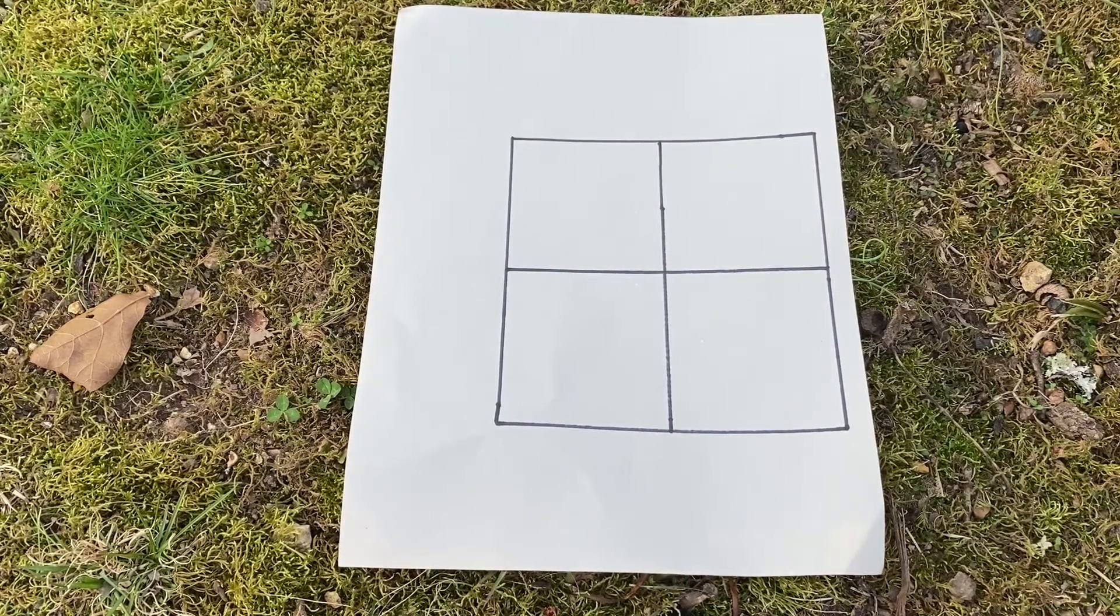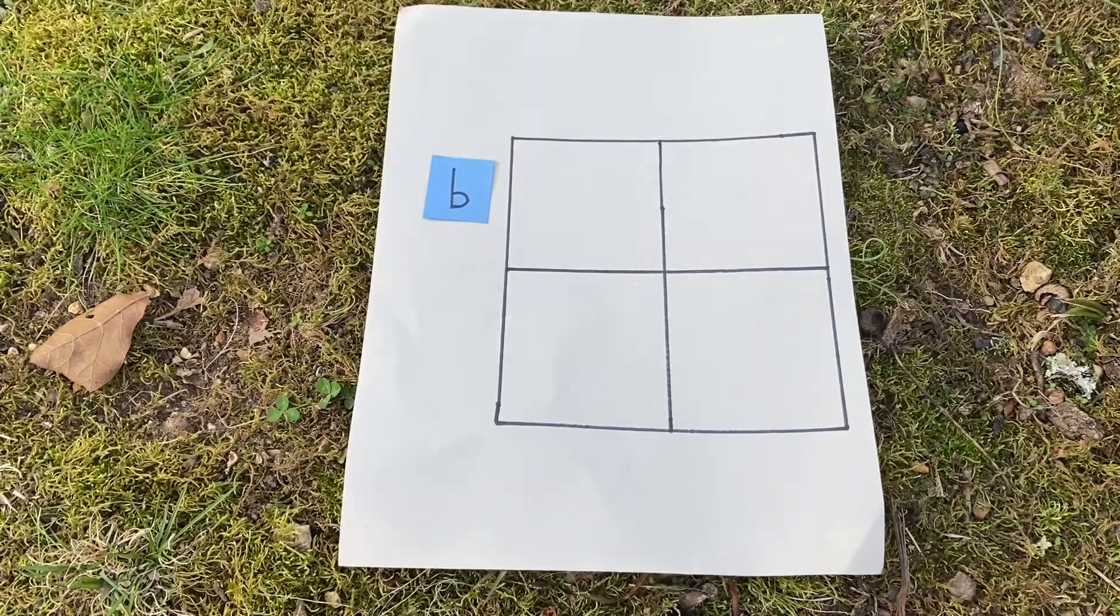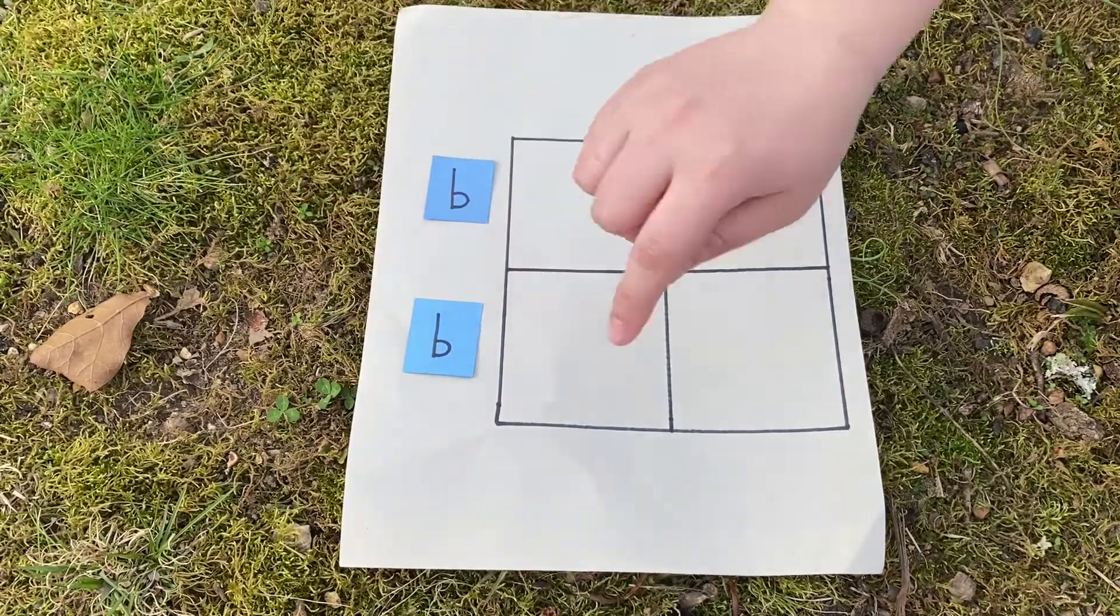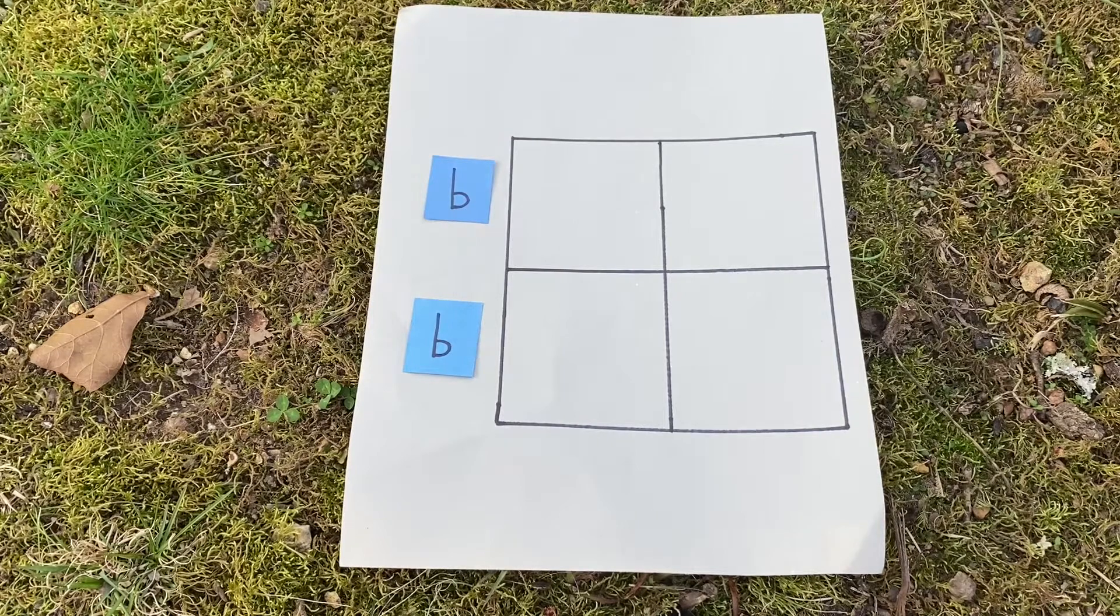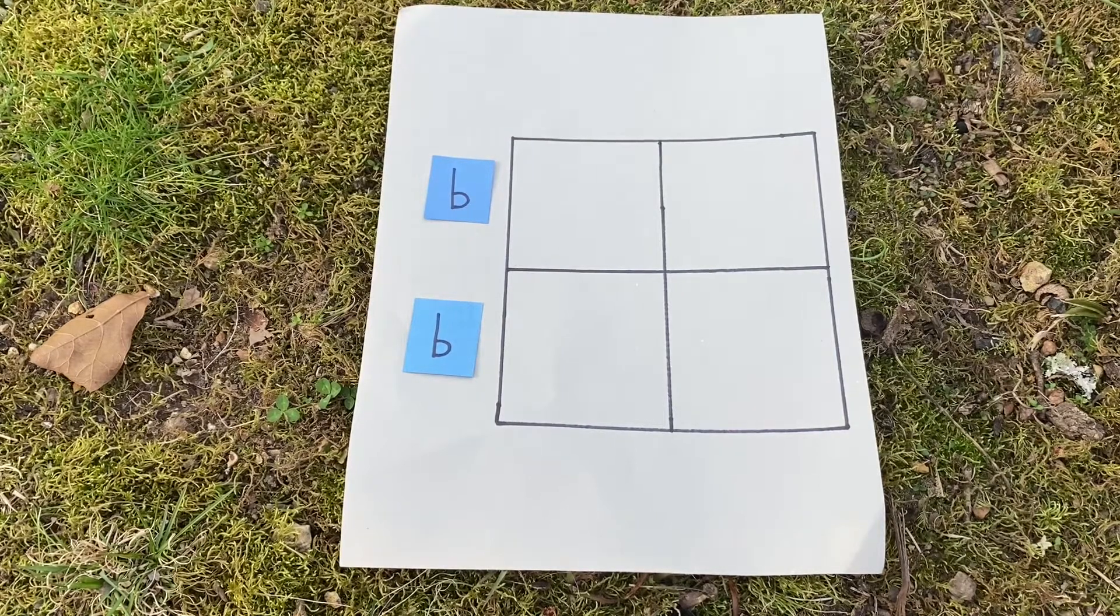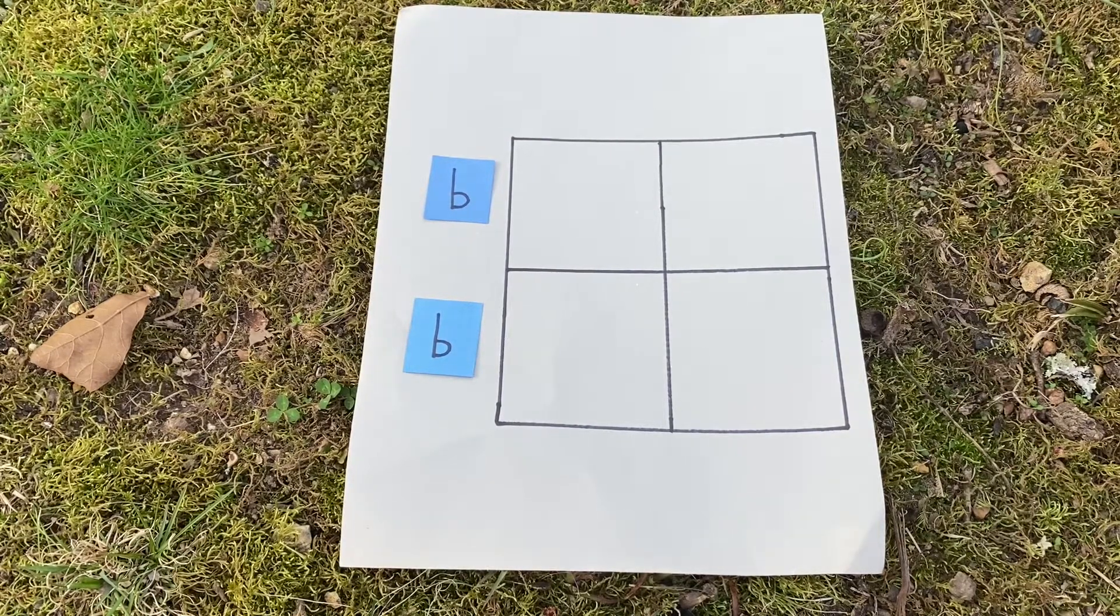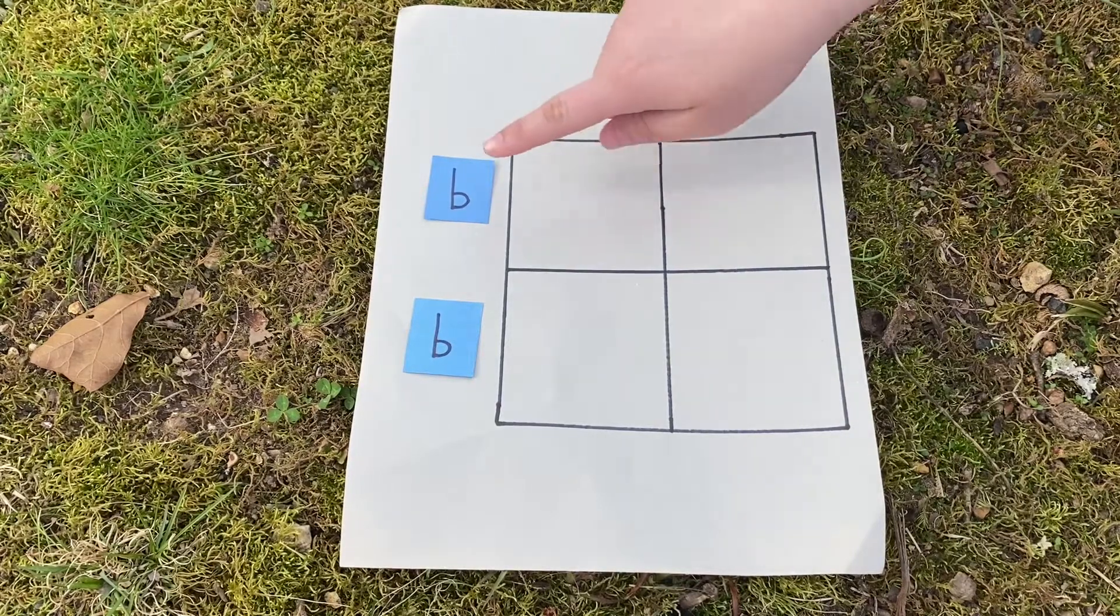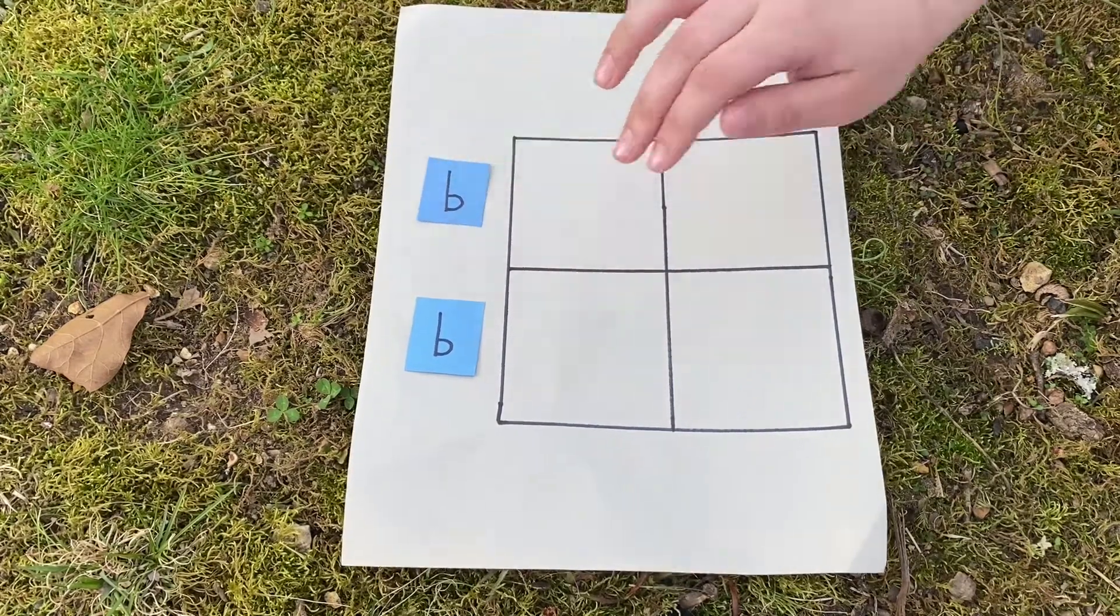So say you have a parent with blue eyes. They're going to have two genes. One gene is going to be a small b and another gene is going to be another small b. That's because they're recessive traits. If you've got a recessive trait to actually show that trait, you have to have both of the small letters for that trait.